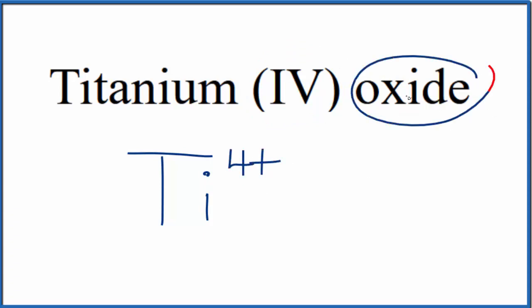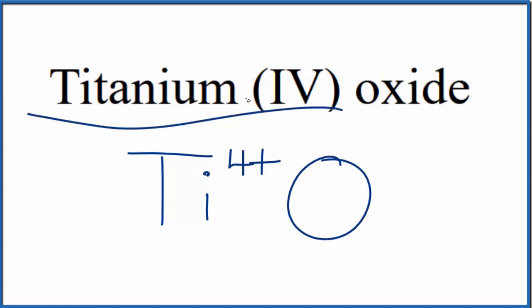Oxide, that comes from oxygen, so we'll just write O. Because titanium is a metal, it's a transition metal, and then oxygen is a nonmetal, we need to think about charge when we write the formula for titanium (IV) oxide.